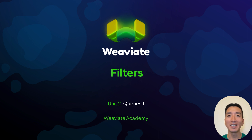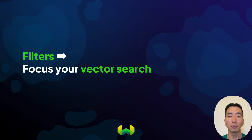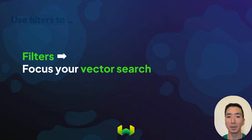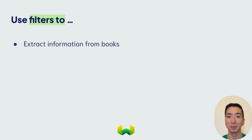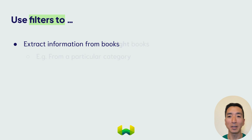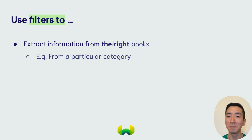Hey, and welcome back. In this section, we'll introduce you to filters in Weaviate. Filters can help you to restrict your vector searches to the parts of the dataset that you're interested in. For example, you might have a class that contains texts from multiple categories of books. In this case, if you want to restrict your vector search to a particular category, such as history, you can use a filter to do just that.